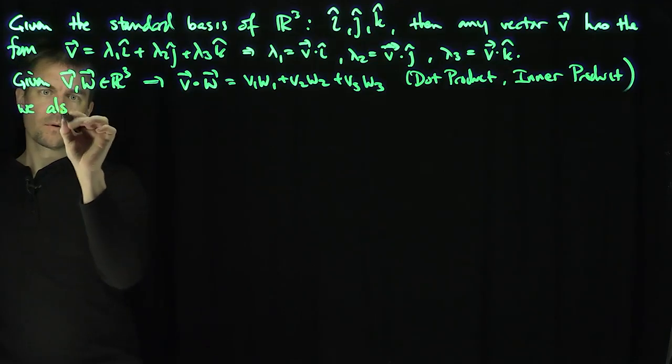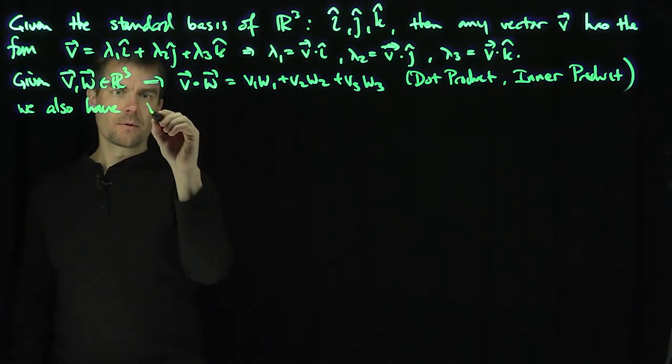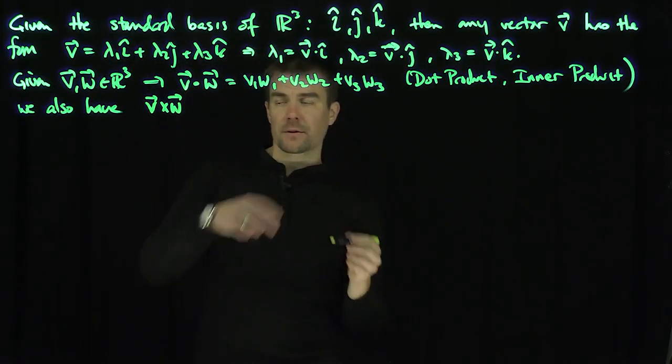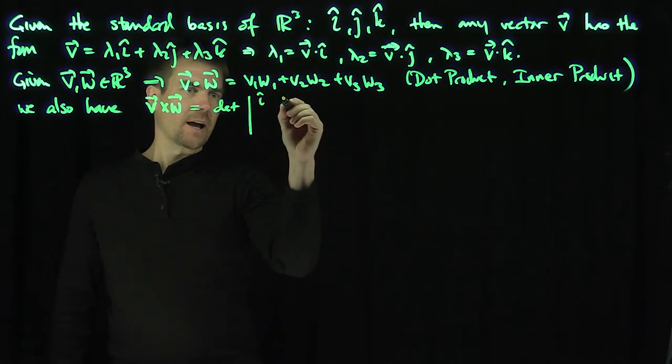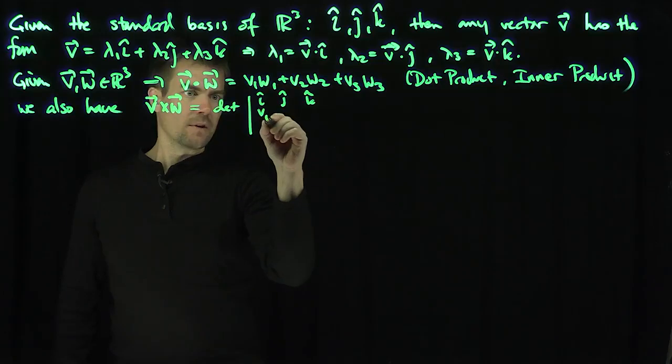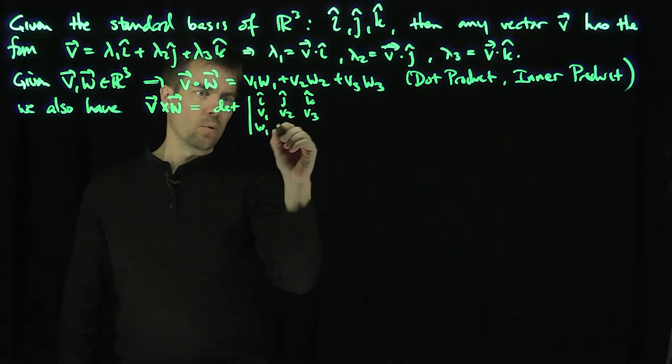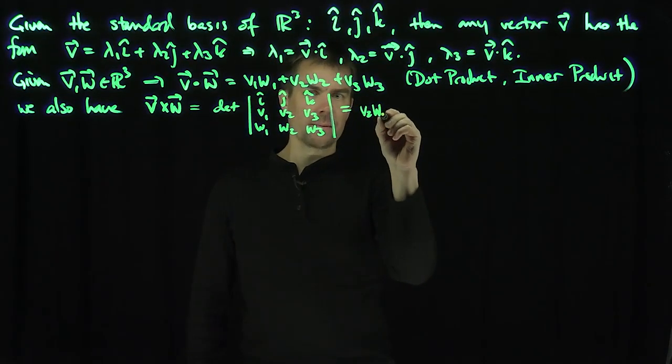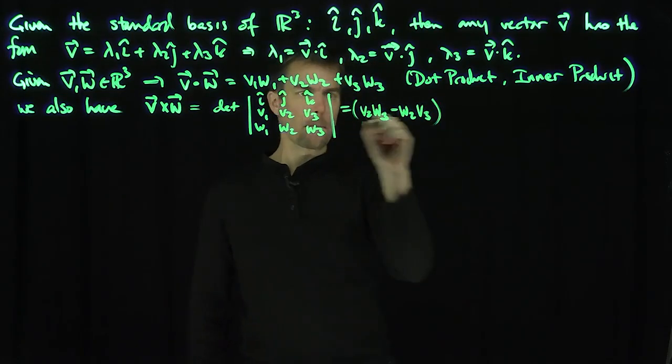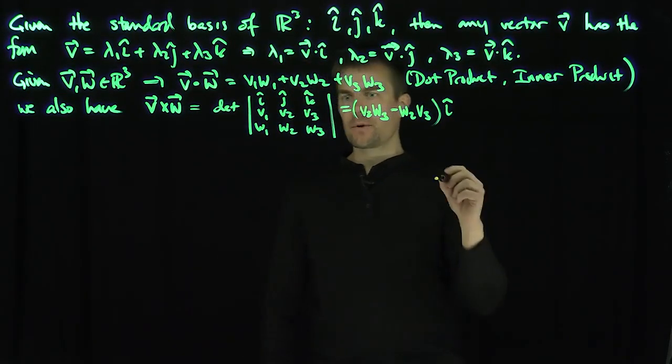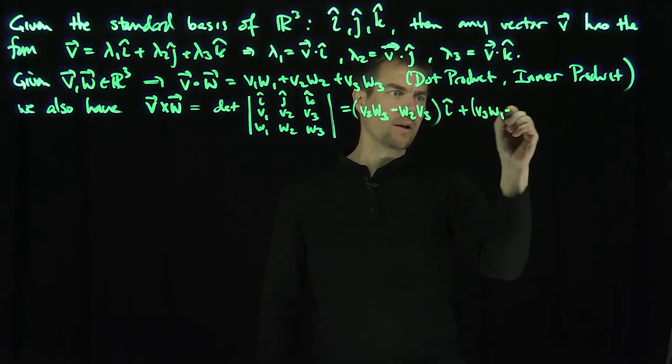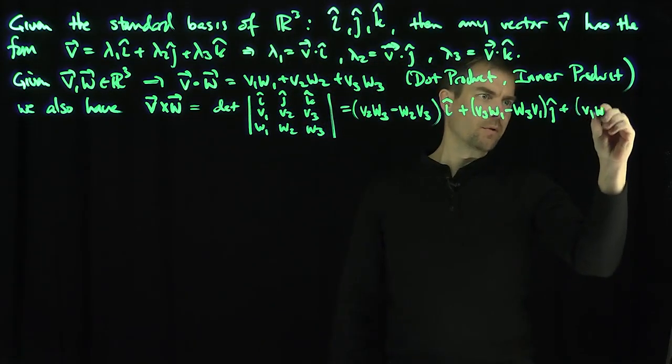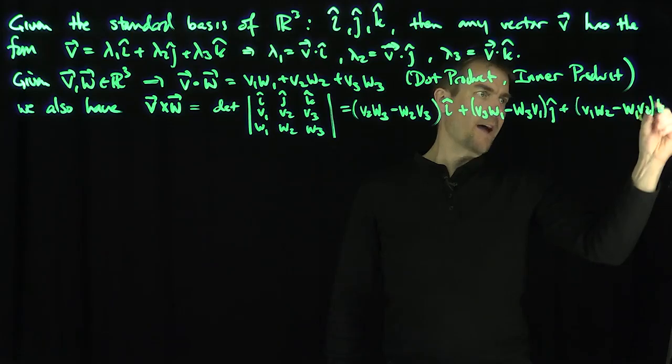We have a vector v cross w. This is going to be a vector itself. It's given by the determinant of i, j, k, v₁, v₂, v₃, w₁, w₂, w₃. It's going to be (v₂w₃ - w₂v₃)i-hat + (v₃w₁ - w₃v₁)j-hat + (v₁w₂ - w₁v₂)k-hat. That's the cross product.